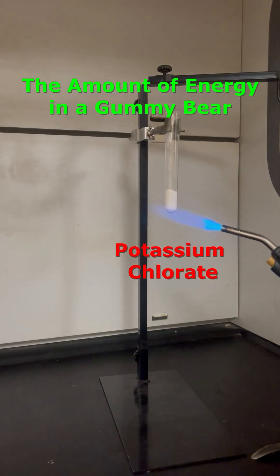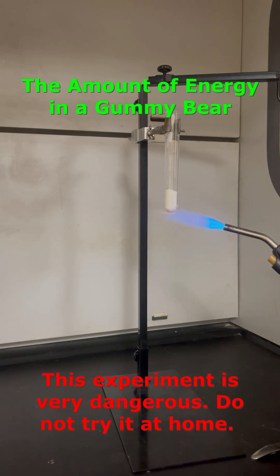If you take 10 grams of potassium chlorate and heat it up until it liquefies, it decomposes to produce oxygen gas.